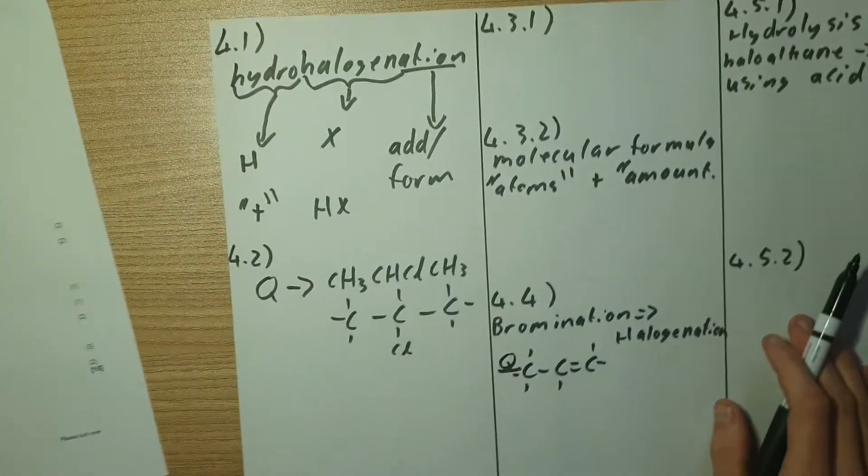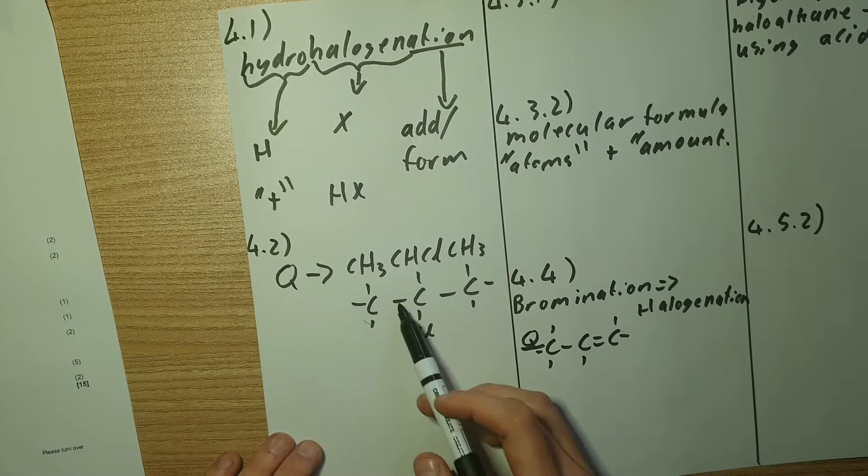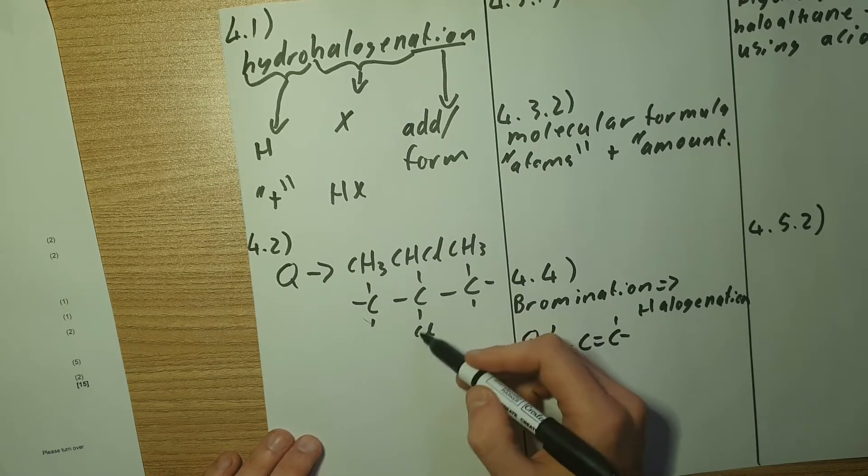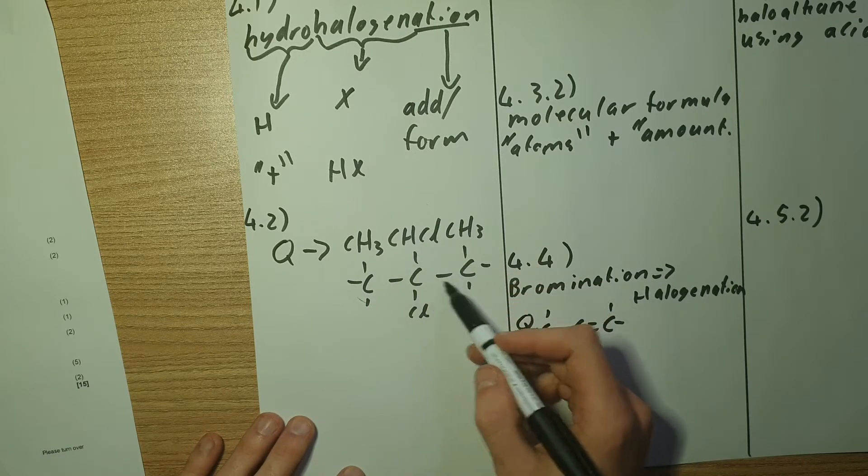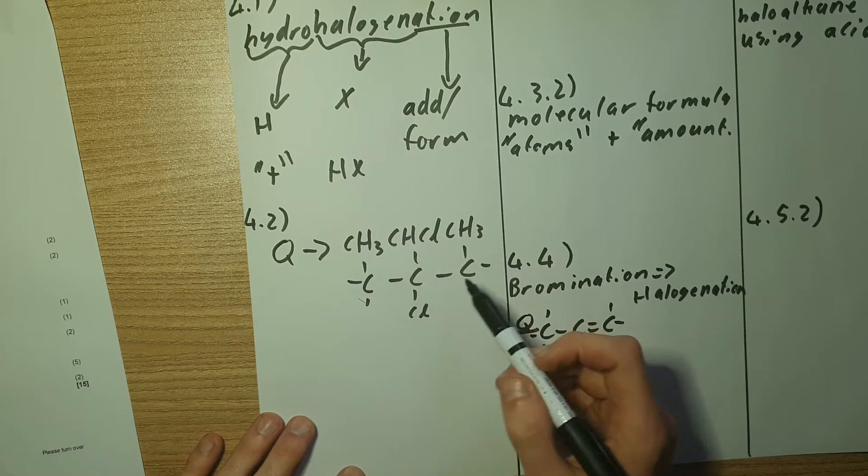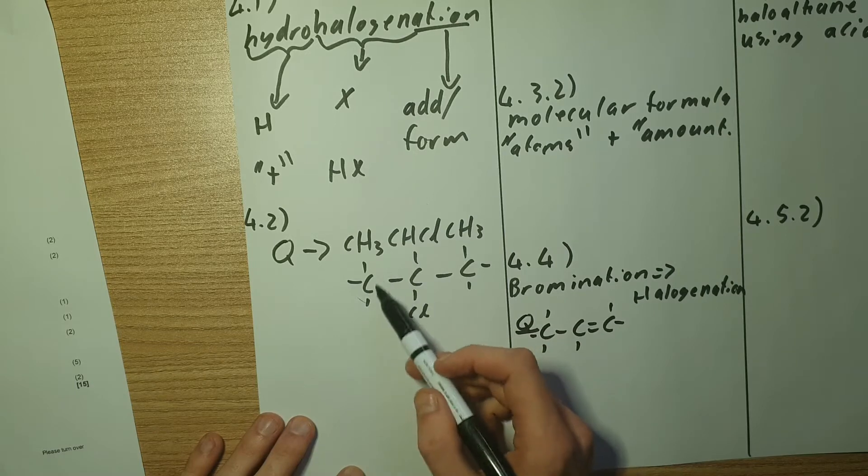So this is what we have now we need to get Q. So I'm going to remove this chlorine and I'm going to remove a hydrogen which means I form a double bond here. If you count this way your double bond will be on this side, if you count this way your double bond will be on that side.